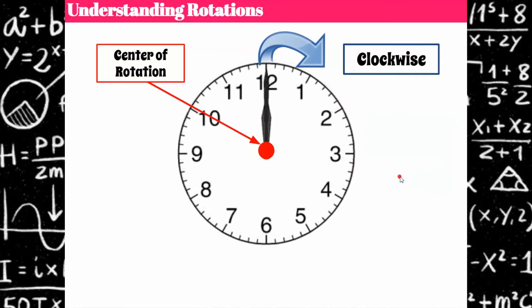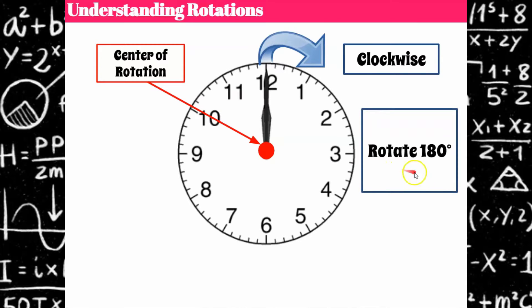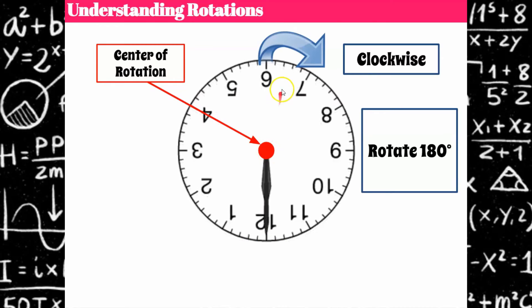Now let's talk about rotating 180 degrees. Notice there is no direction specified — it does not say clockwise or counterclockwise. That's because when you rotate 180 degrees, it doesn't matter what direction you go; you end up in the same spot. The 12 went a full 180 degrees — think about a straight angle. A straight angle is 180 degrees, or a half turn. One quarter, two quarters — one half of a turn. So the clock is essentially upside down.